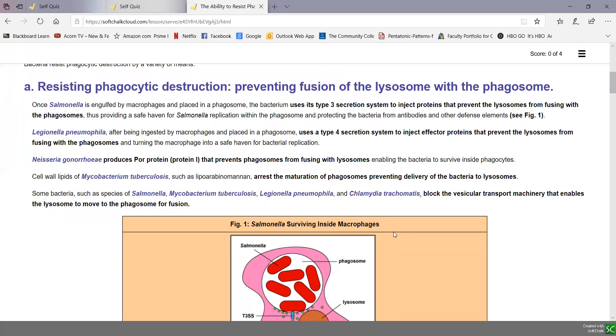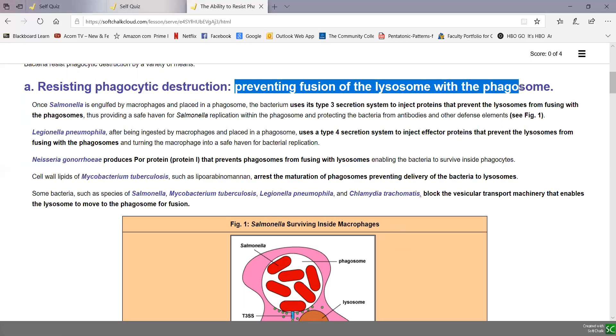There's a wide variety of ways they can do this. One of the reasons we went through all the steps in phagocytosis earlier is so you can understand how bacteria can resist the different steps. One way they can resist phagocytic destruction is they can prevent fusion of the lysosome, the membrane-bound sac containing the killing chemicals, with the phagosome, the membrane-bound sac containing the engulfed organism.